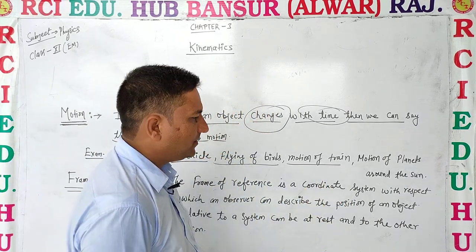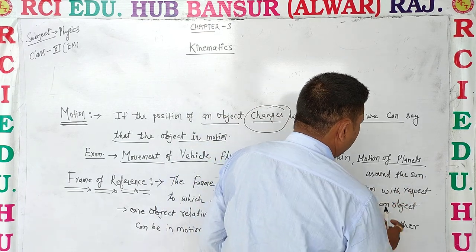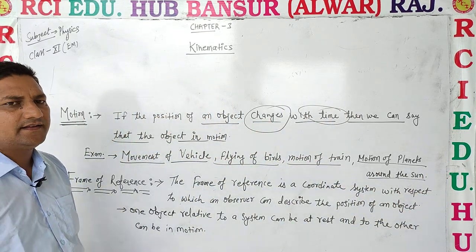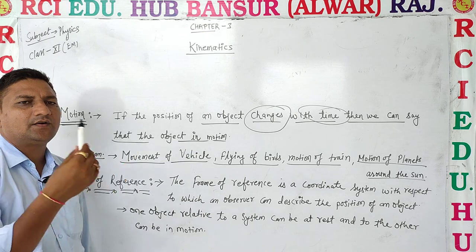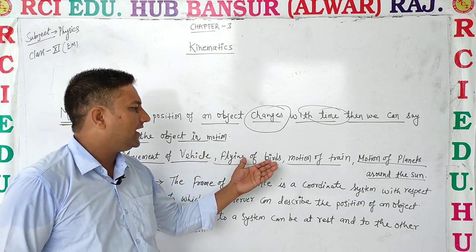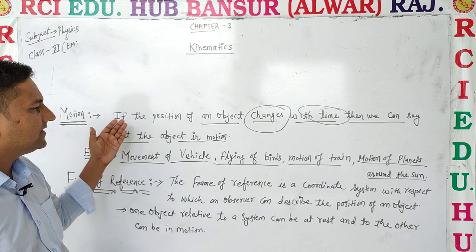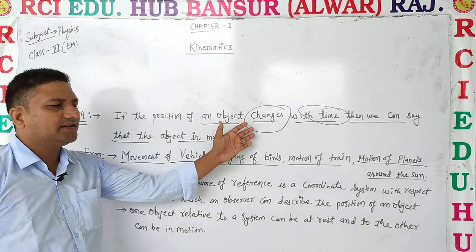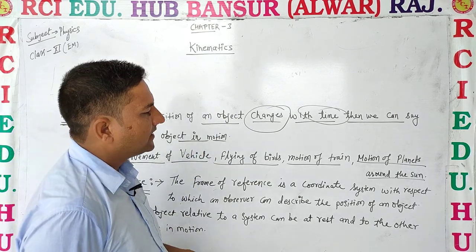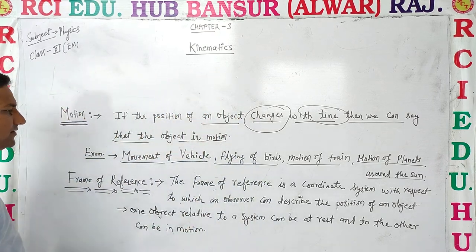Other examples include the motion of planets. Motion means the position changes with respect to time.